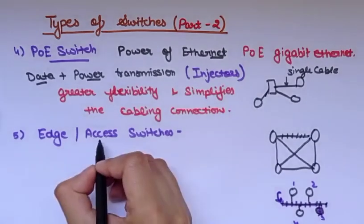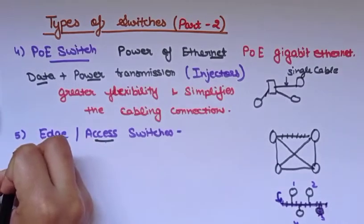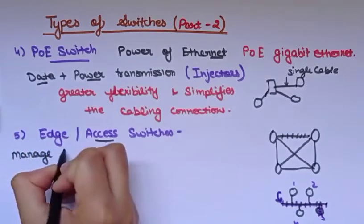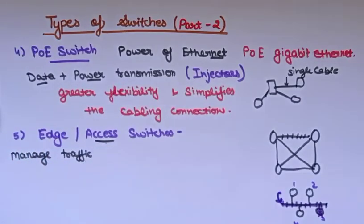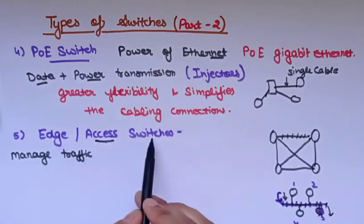In the case of edge or access switches, as the name implies, it becomes easier to access data or any file using this type of switch. These switches manage traffic — they are used to manage traffic either coming into or exiting the network. If any file enters or any packet is going out, we work at the edge or access switch.